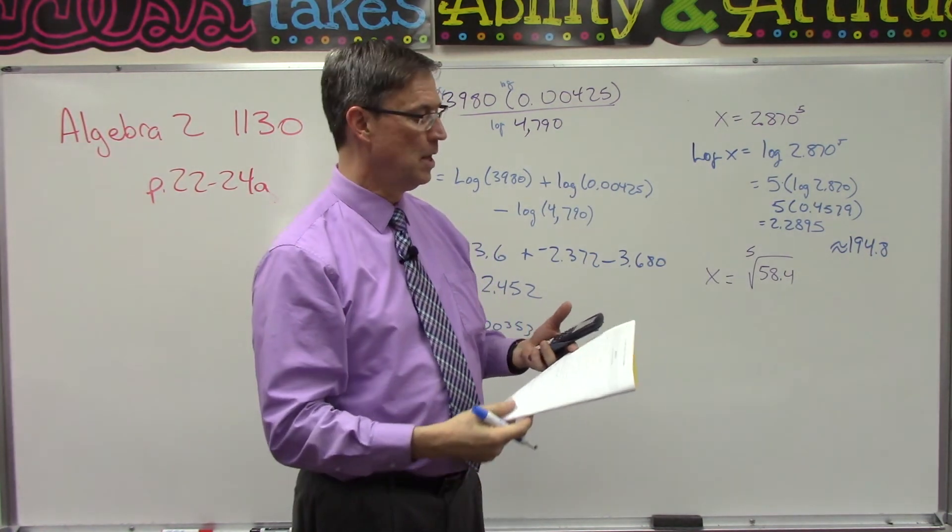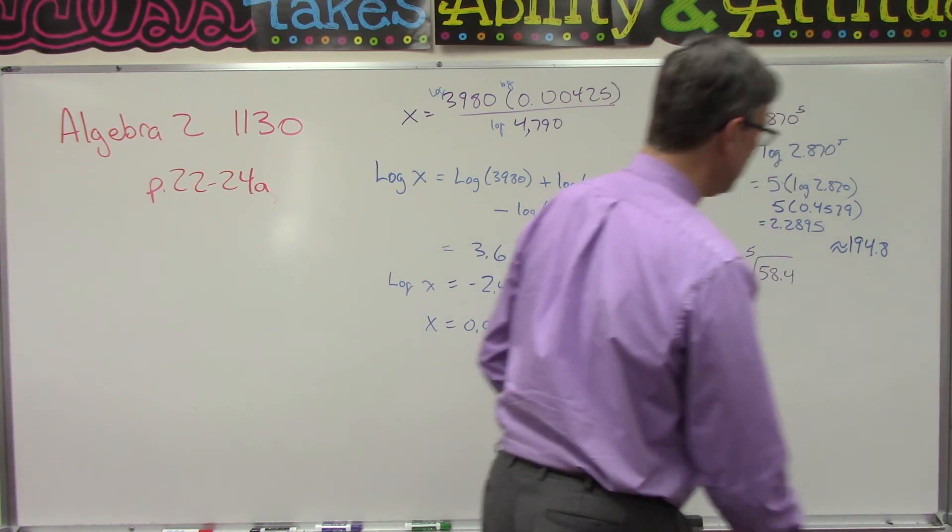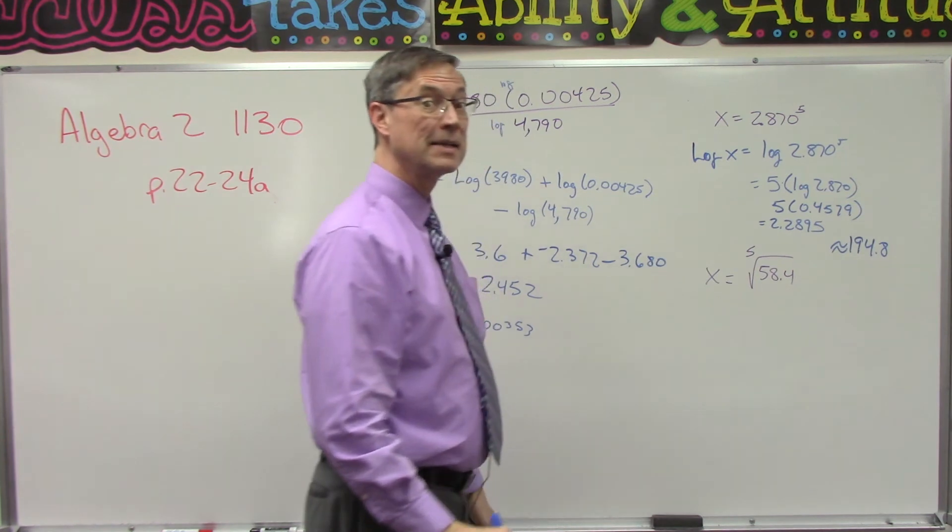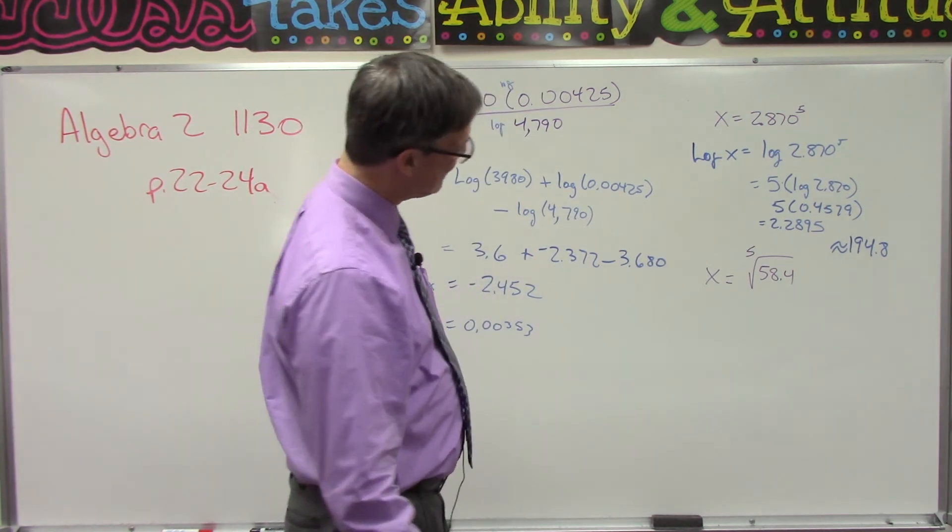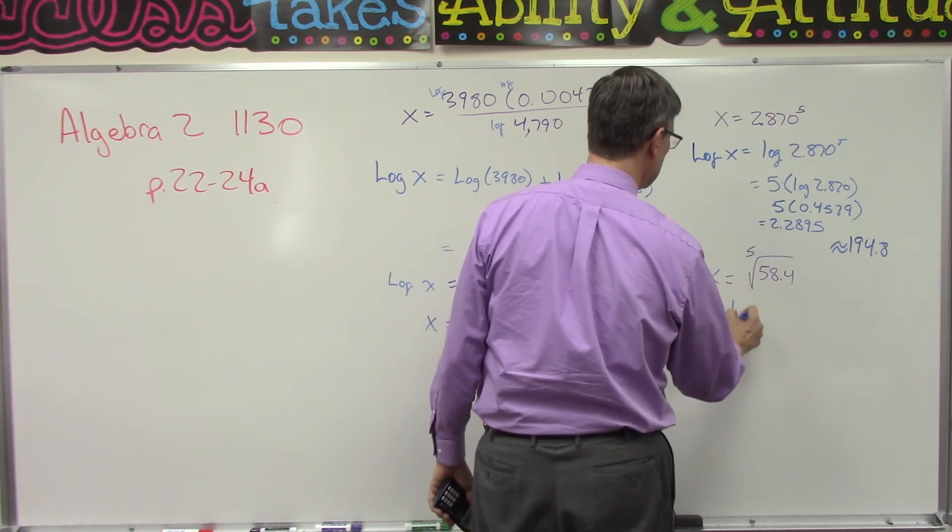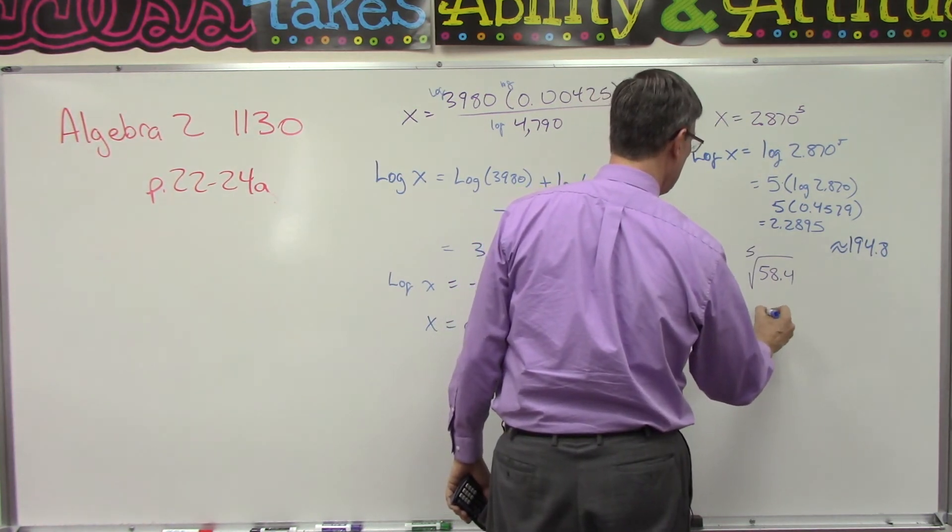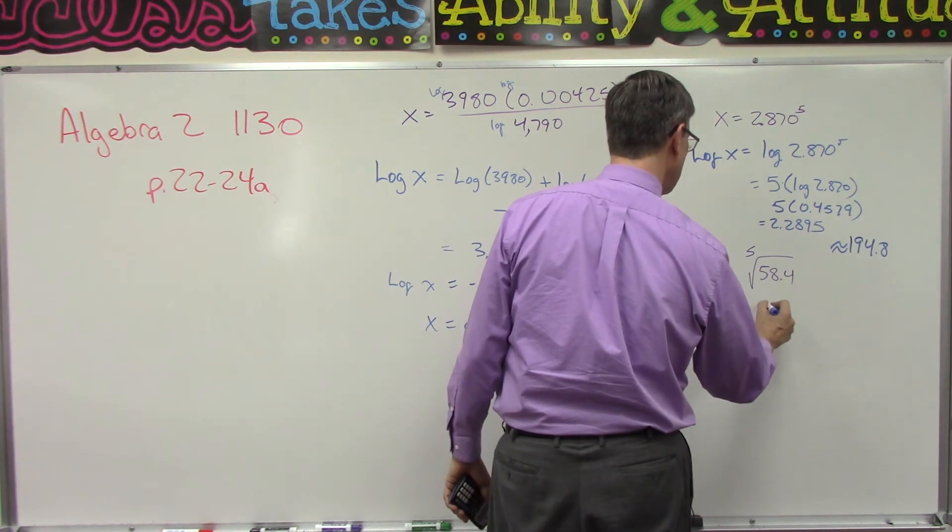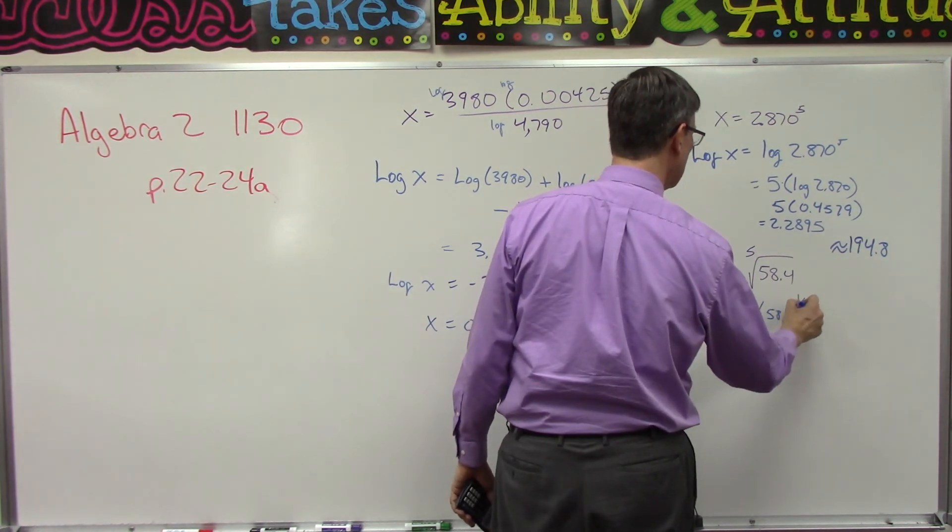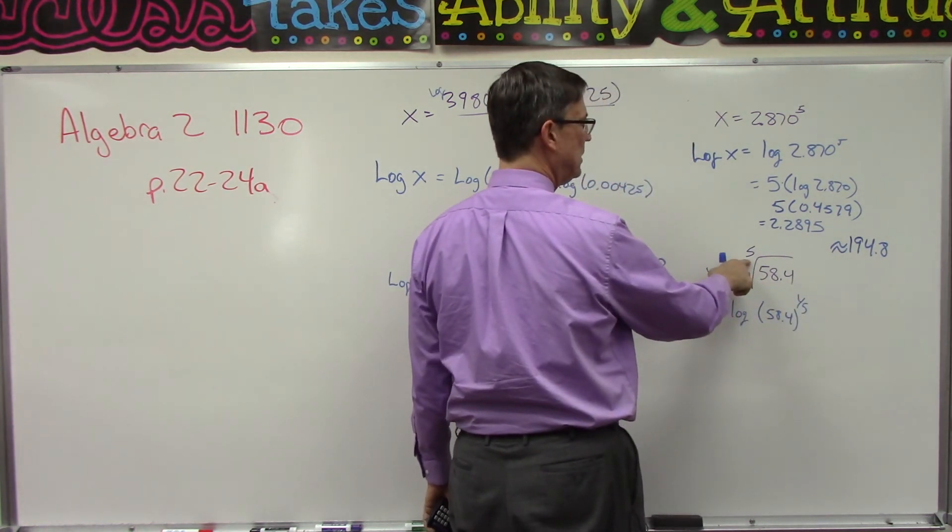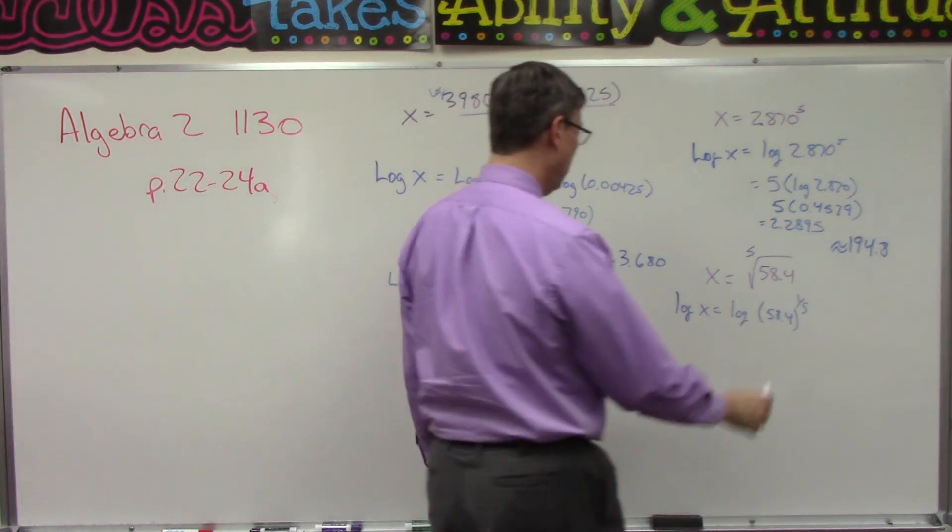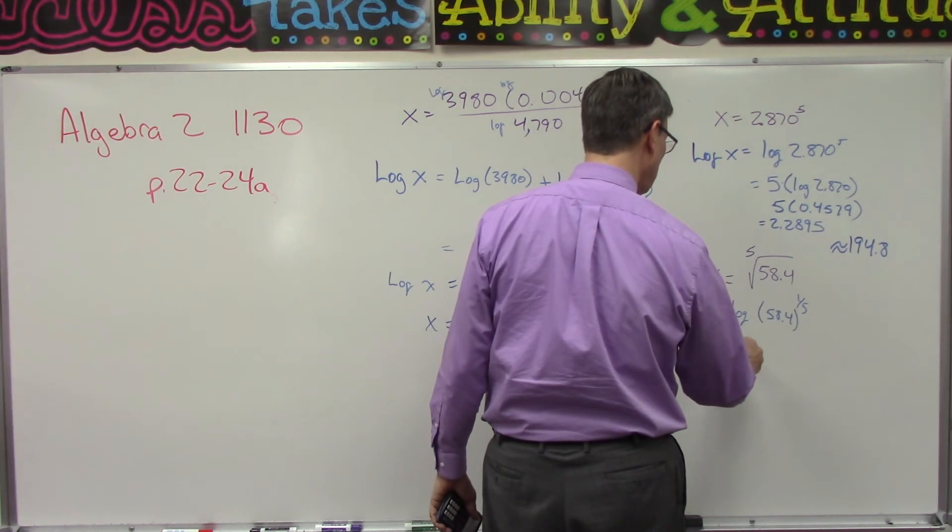Let's do one more. This one has the radical and an index of five—interesting. So let's do log of x equals the log of 58.4, but I'm going to raise it to the one-fifth power because this index of five means I can write that as a fraction, one-fifth. So now to solve it, I'll bring the one-fifth to the front times the log of 58.4.